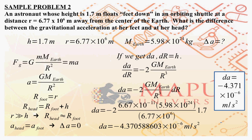The mass of the earth is 5.98 times 10 to the 24th kilograms. We are required to get the difference in acceleration between the feet and the head of the astronaut. The gravitational force is F_g equals G times m_astronaut times m_earth divided by R squared. By Newton's second law, F_g equals m times a; canceling m, we get a equals G times m_earth over R squared.